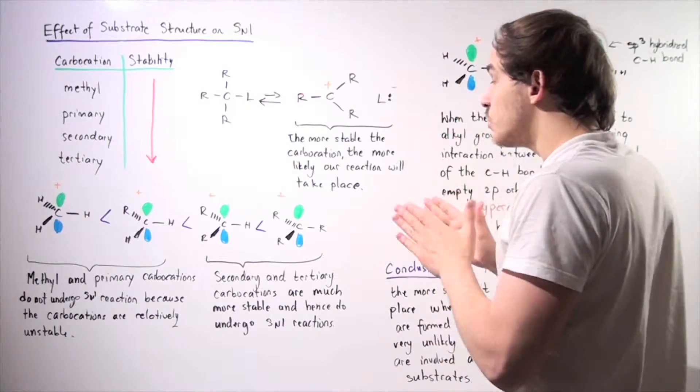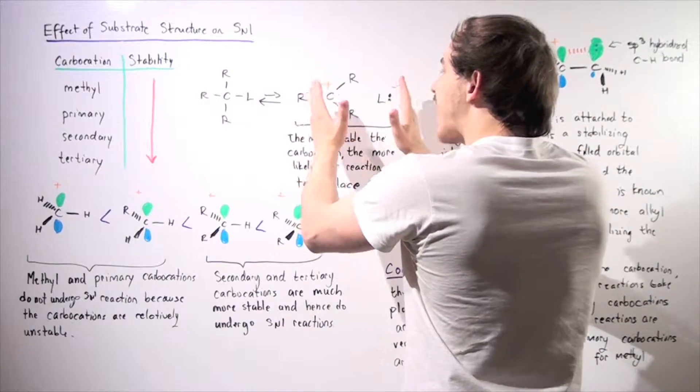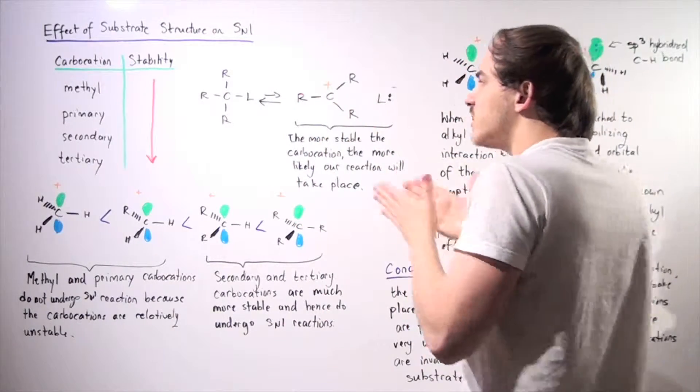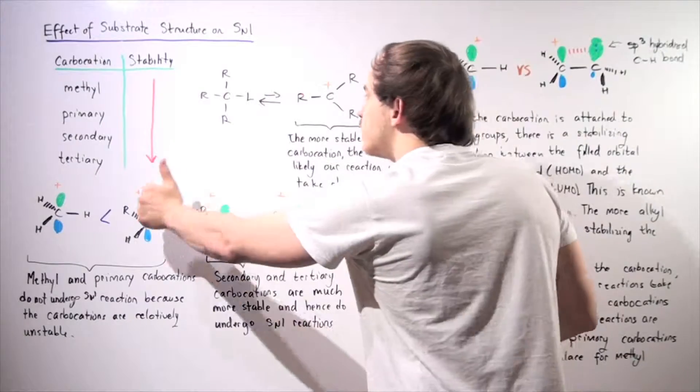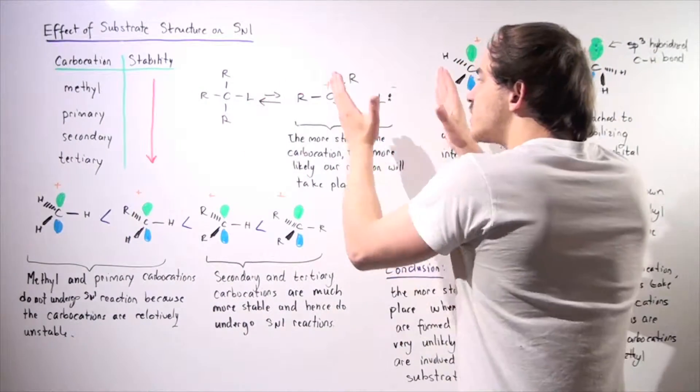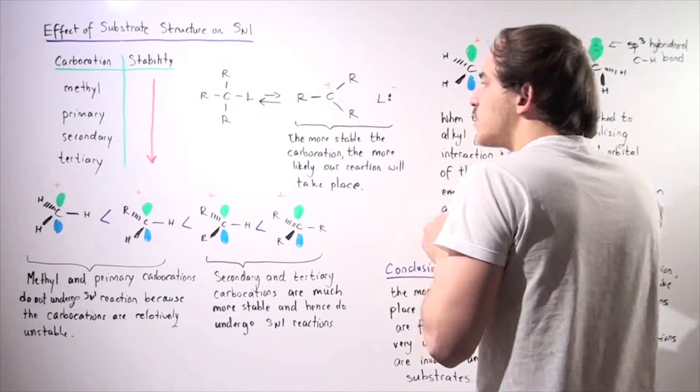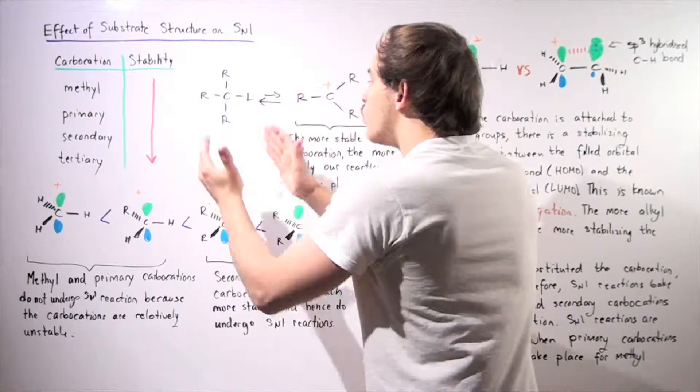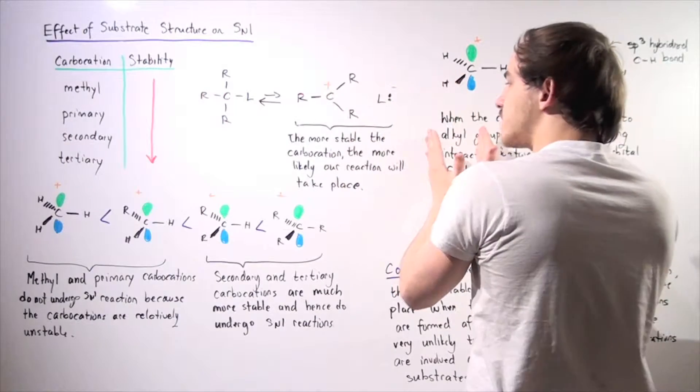Now recall that the more stable our products are, the more likely our reaction will take place in this forward product direction. In other words, the more stable our products are, the more likely that equilibrium will lie towards the product side.